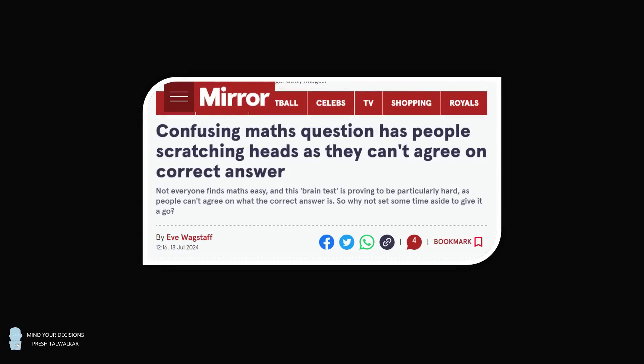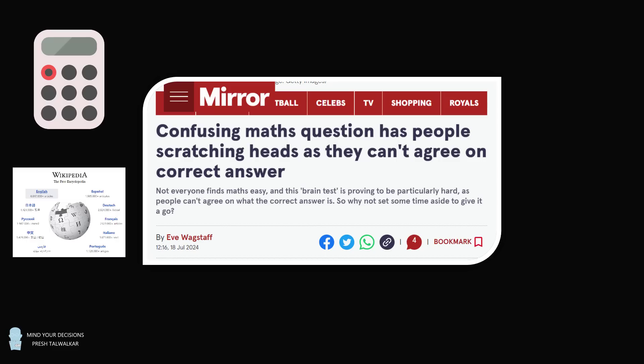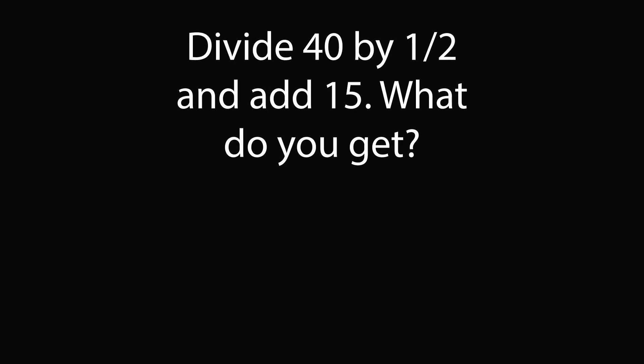Hey, this is Presh Tawalker. The year is 2024. We have calculators, we have Wikipedia, we have AI that can solve Olympiad math questions. But would you believe people on the internet are still arguing about a simple math question? Divide 40 by 1 half and add 15. What do you get?